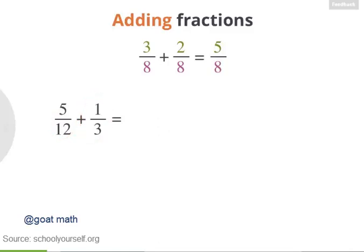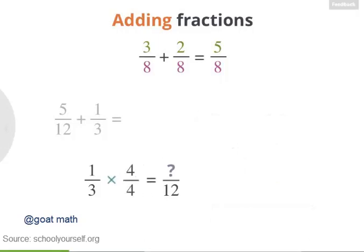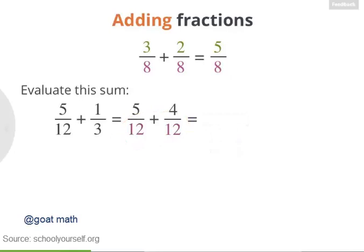Well, the trick is to find equivalent fractions that do have matching denominators. Let's take 1 third, and let's rewrite it as a fraction with a 12 in the denominator. What's the numerator for this equivalent fraction? Nicely done. You can multiply the numerator and denominator by 4, showing that 1 third is the same thing as 4 twelfths. So that means that 5 twelfths plus 1 third equals 5 twelfths plus 4 twelfths. So what's 5 twelfths plus 4 twelfths?